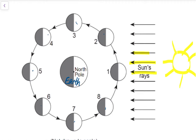So if the sun is over here on the right side, we can see that only half of the moon is lit up at any given time. But because the moon is revolving around the earth, we see different parts of that lit up side of the moon. So here at position one, the side of the moon that is lit up by the sun is facing away from earth.